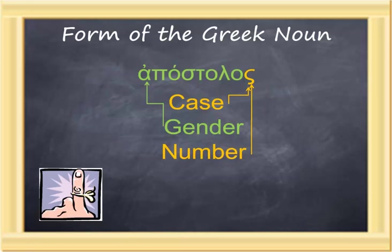We begin with a bit of review of the form of the Greek noun. A Greek noun consists of a stem and a case ending. The case ending provides two bits of information: first, the case — namely how the Greek noun is used in the sentence — and second, the number, whether the noun is singular or plural in form.